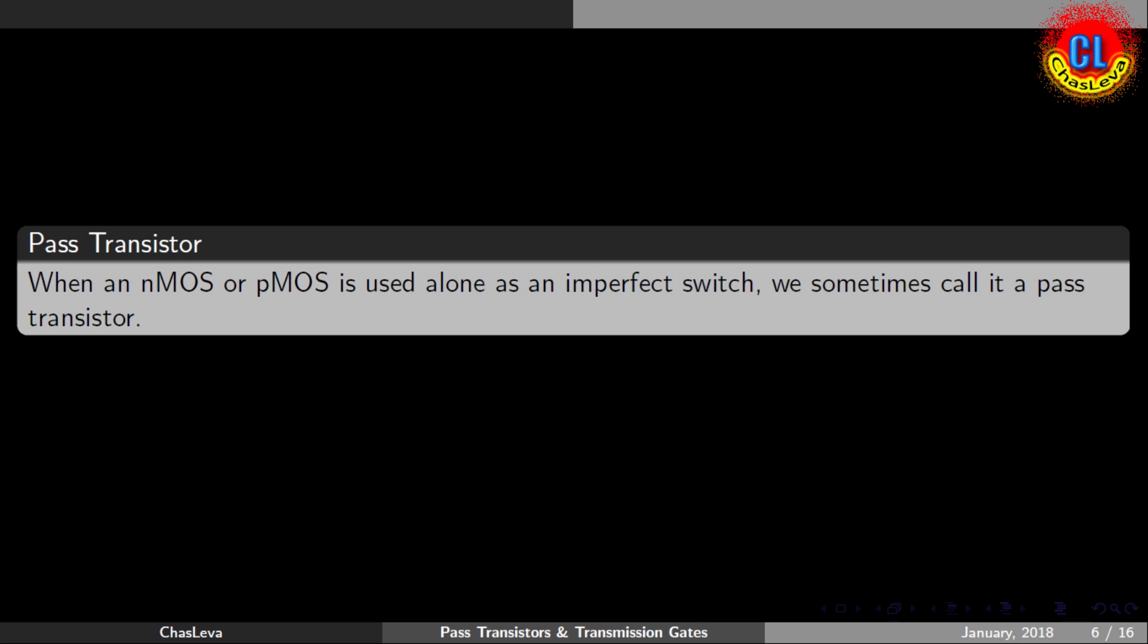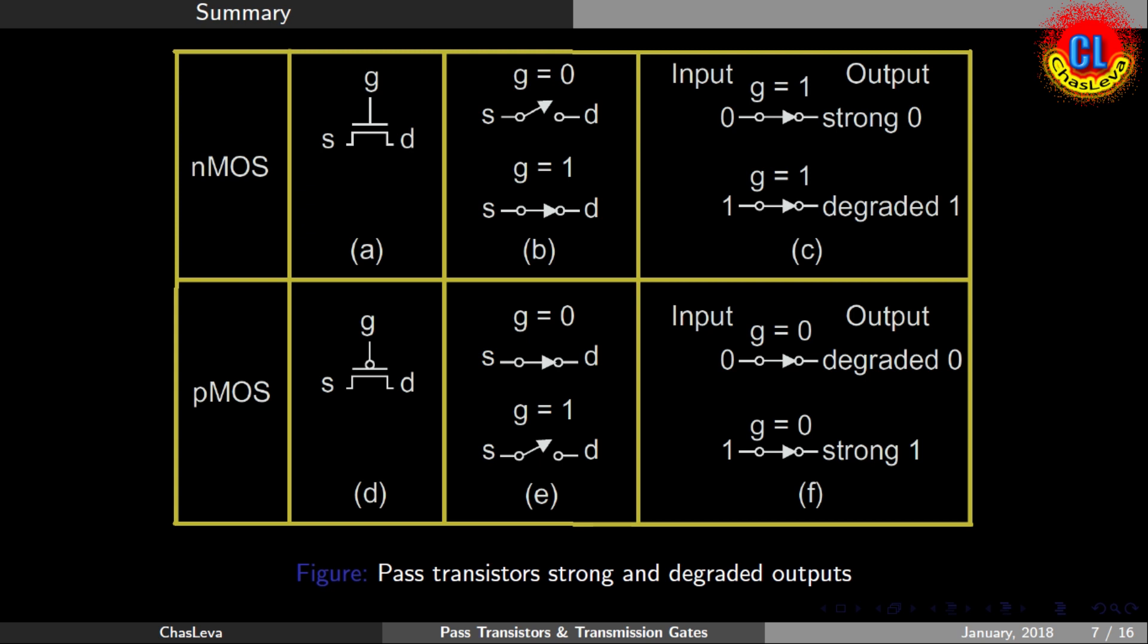Now we can define pass transistor in another way. When an NMOS or PMOS transistor is used alone as an imperfect switch, we sometimes call it as pass transistor.